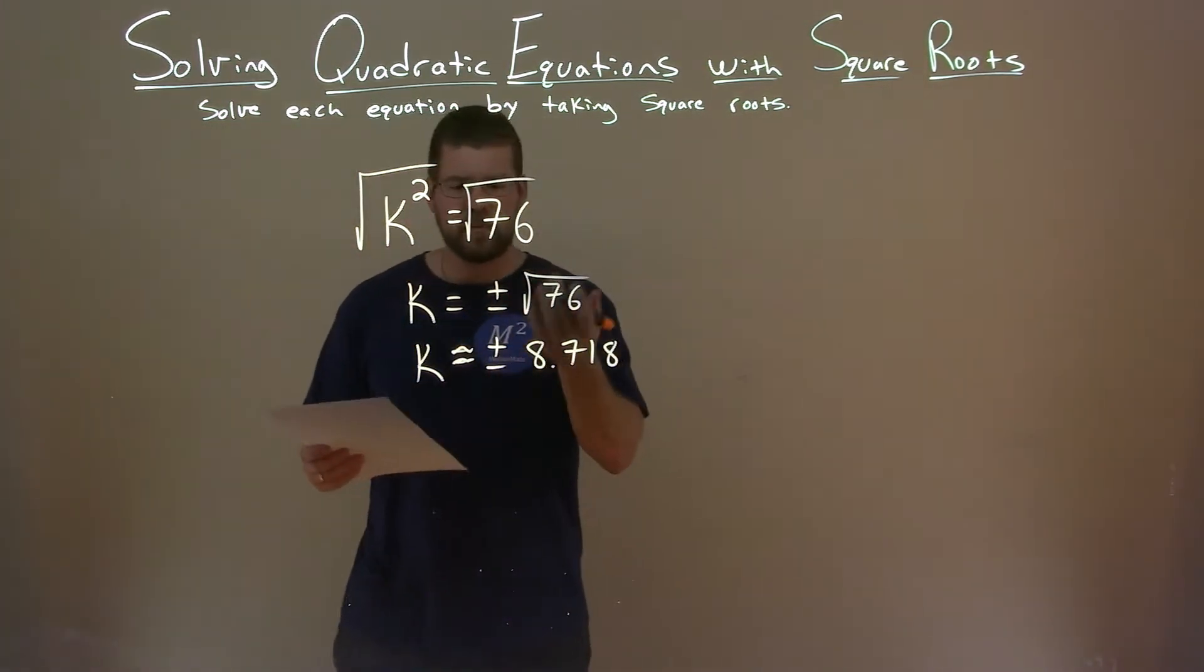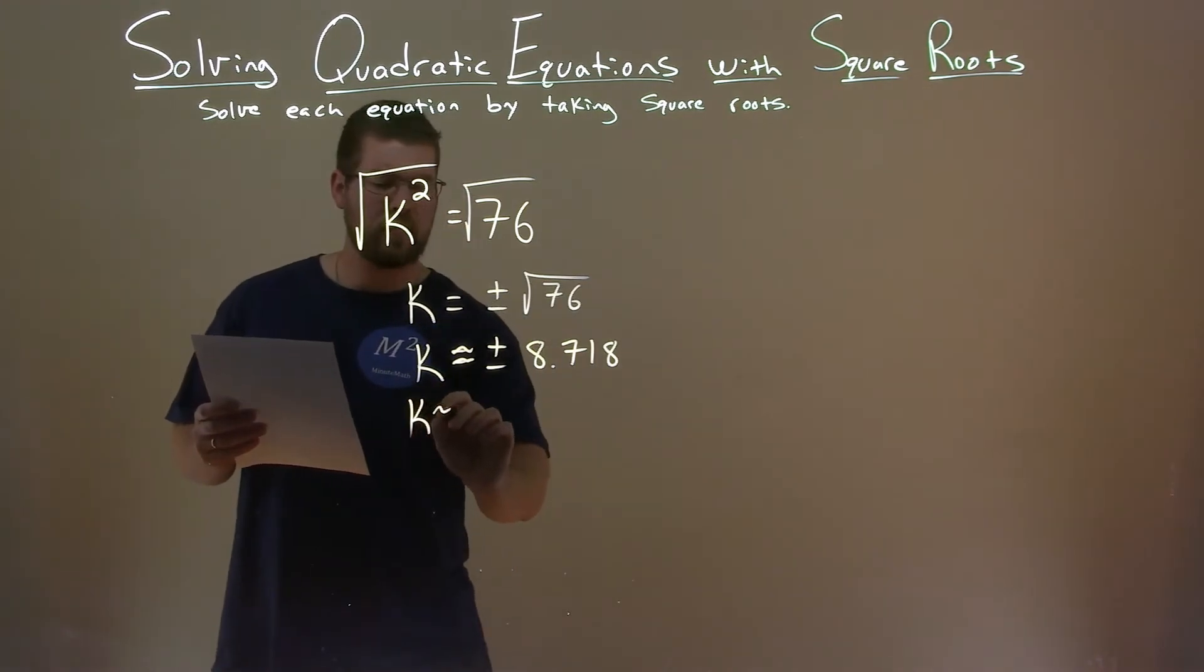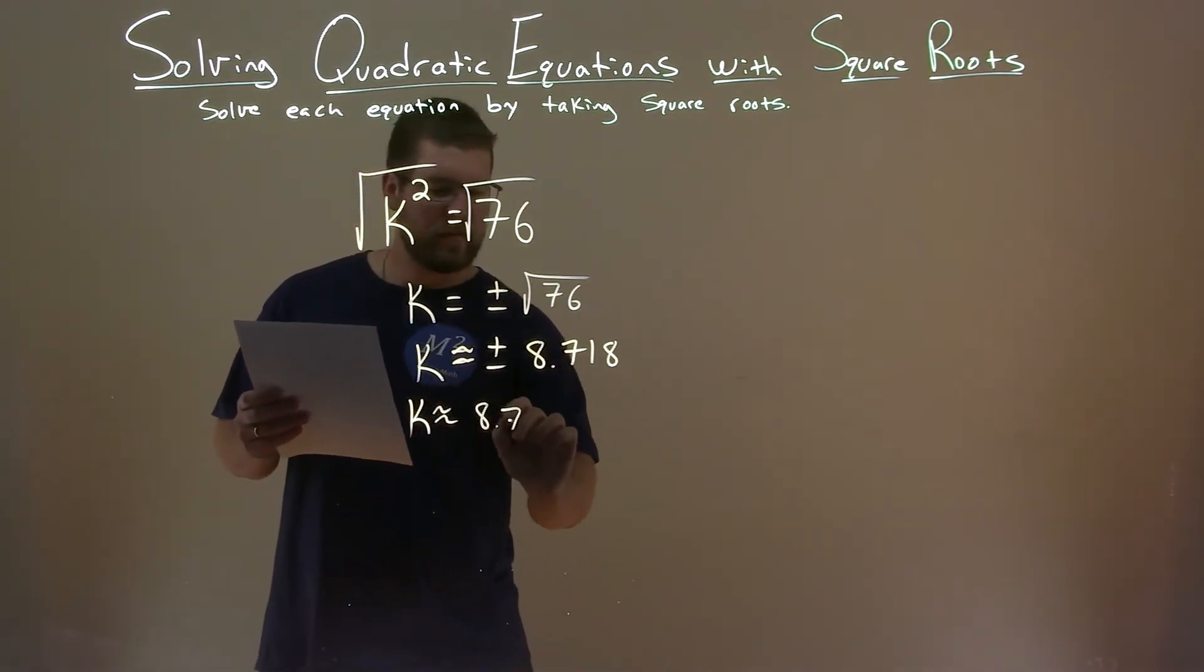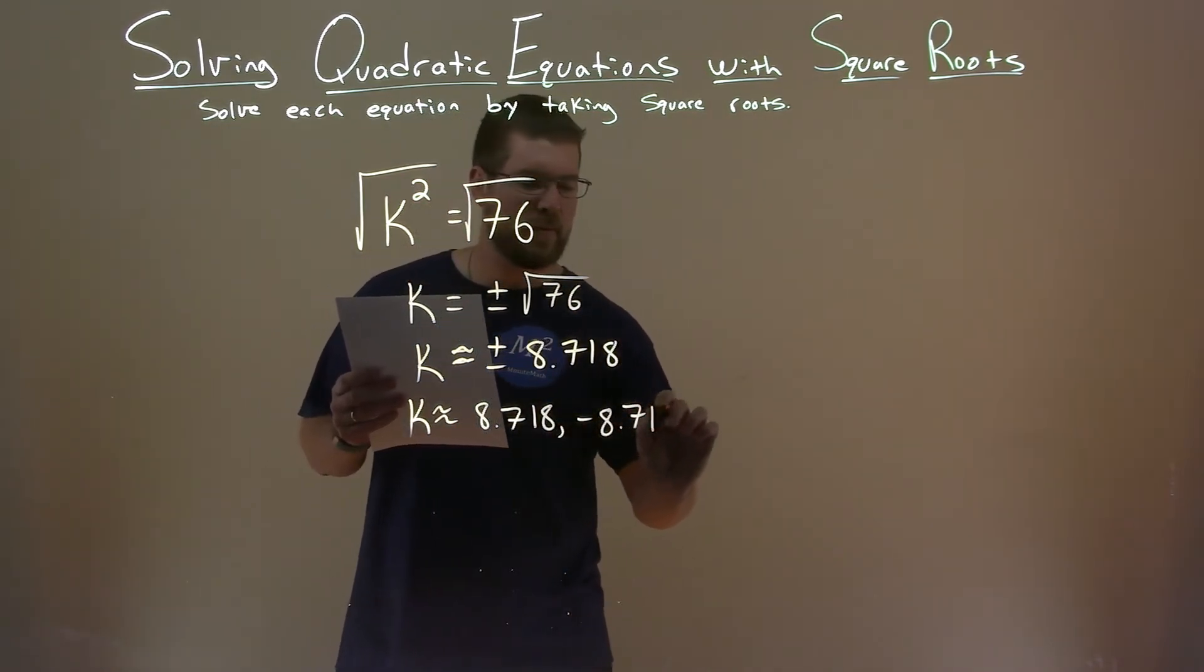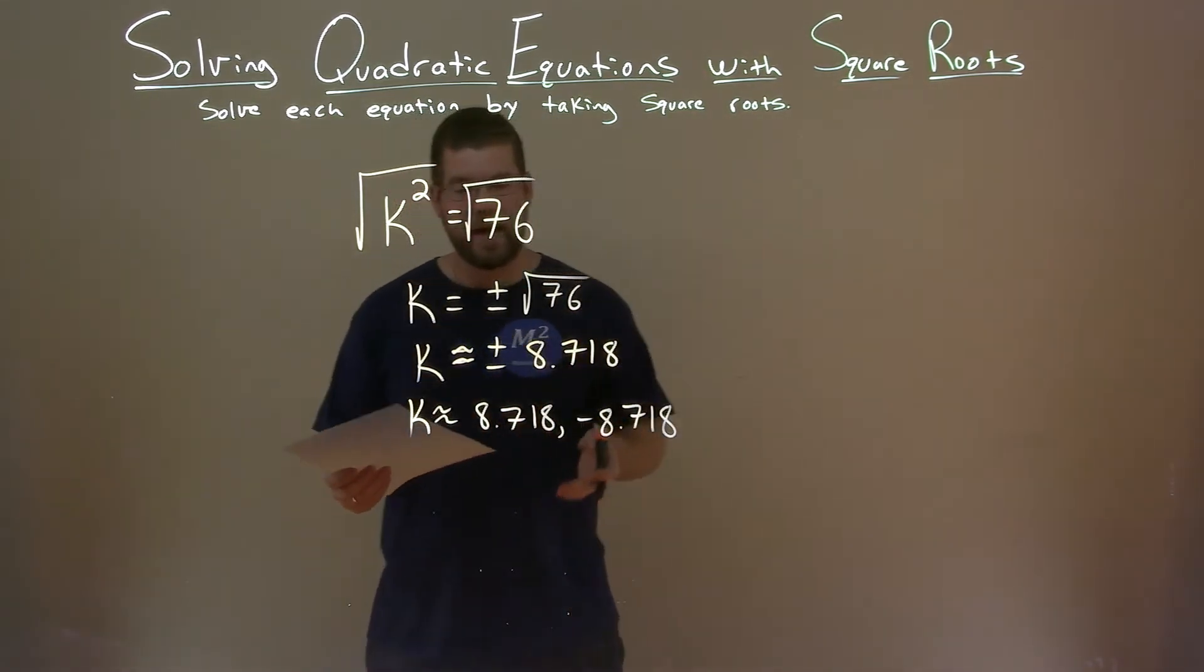So plus or minus, we can write that as k is approximately positive 8.718 and negative 8.718. And there we have our answer.